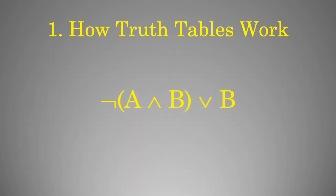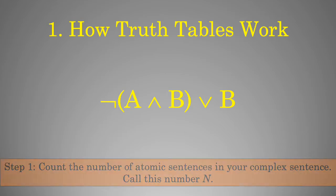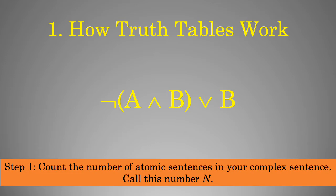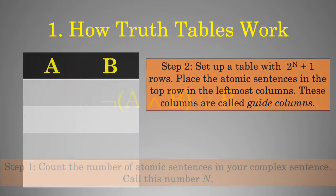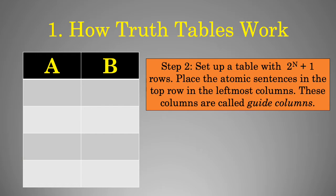The most basic function of truth tables is telling us the conditions under which a complex statement is true and when it's false. Let's illustrate this with the following expression: either not A and B, or B. The first thing we need to do is count the number of atomic sentences in this expression. As we can see, there are exactly two — A and B. Let's call this number N. Next we have to set up guide columns, which are basically the ingredients in that cooking analogy.